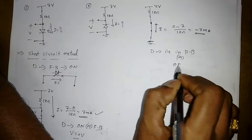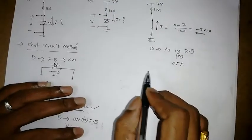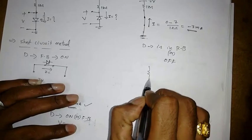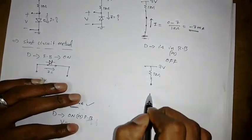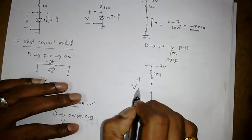Or it is in off mode. So off mode means the equivalent model will be like this. 1 kilo ohm. This is 7 volt. This is open circuit. And this is ground.